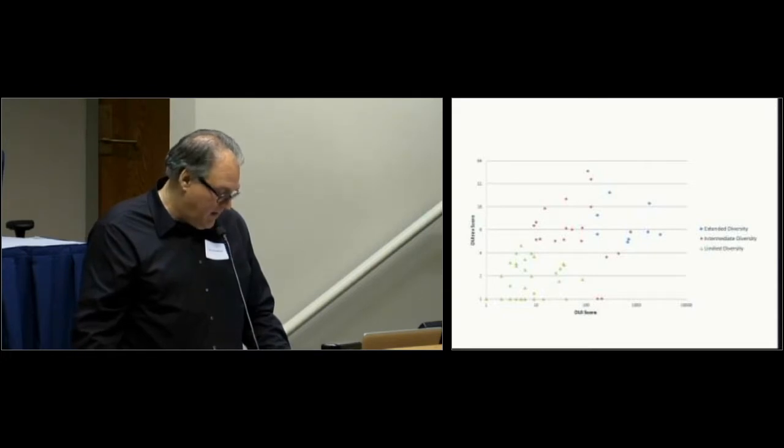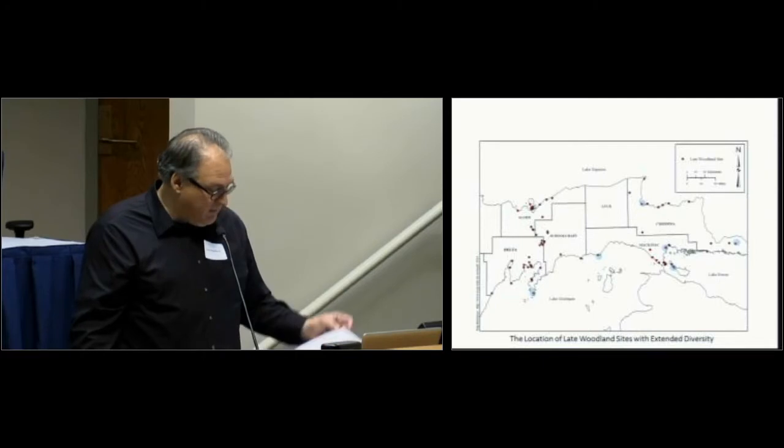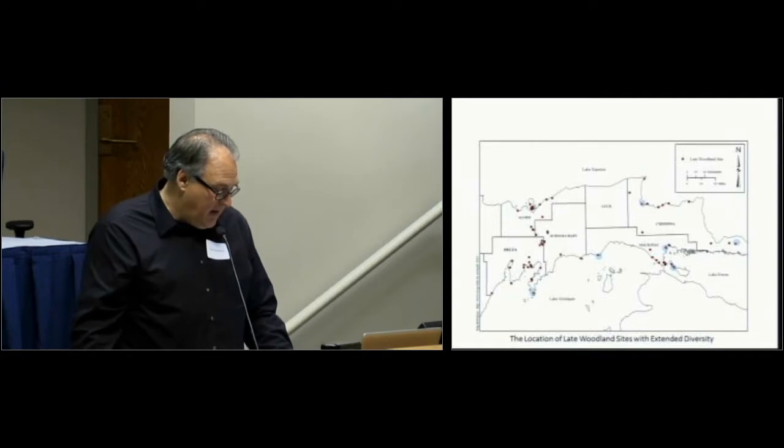Based on the diversity index, nine late woodland components from seven sites were identified as most likely candidates for the larger residential sites that were used as seasonal aggregation locales where spring and or fall fishing took place. In addition, Williams Landing and the Juntman site have been highlighted because they will be featured in the following discussion. Each of the extended diversity sites is located along the shore of one of the Great Lakes. They produced spring and or fall spawning fish remains, and each is multi-component, including earlier and or later occupations, and in many cases, multiple late woodland occupations.